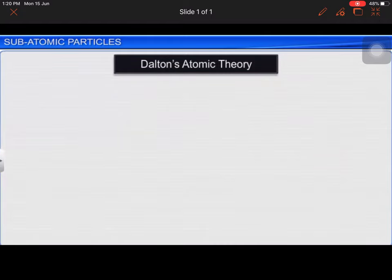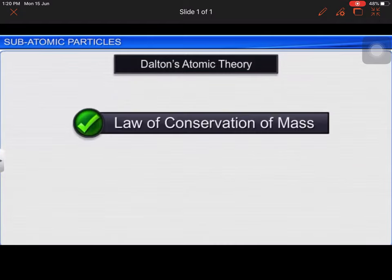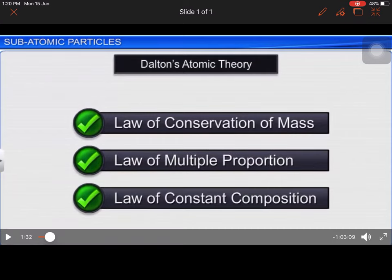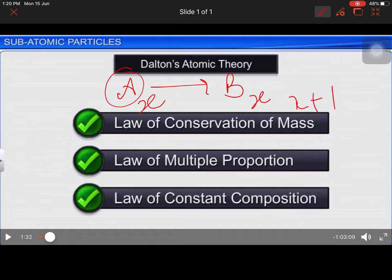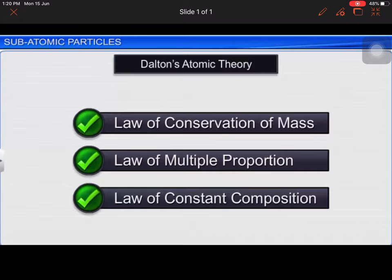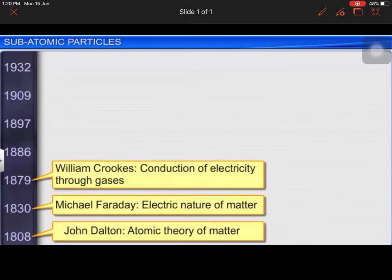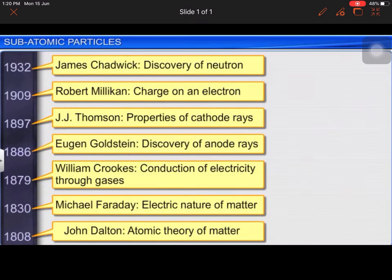Dalton's atomic theory was able to explain the laws of conservation of mass, multiple proportion and constant composition. One important point is conservation of mass. However, it could not explain the results of many experiments conducted by scientists later.